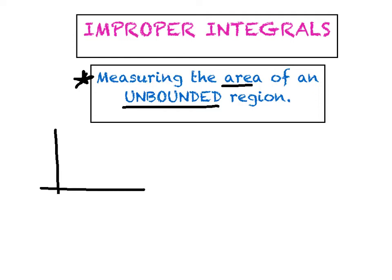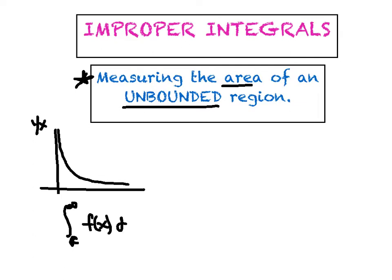Let me first pose this graph right here. Let's talk about 1 over x, the graph of 1 over x. It's asymptotic to both axes. Maybe we wanted to try to integrate that function from 1 to infinity. This region is what I call an unbounded region because this graph never actually hits the x-axis, and so as we go towards infinity, we have an unbounded region.